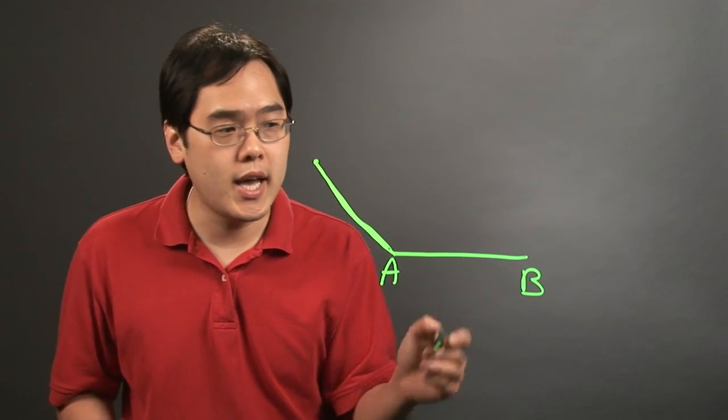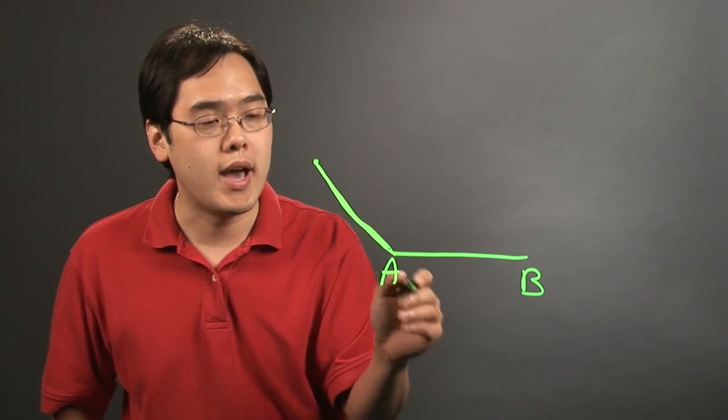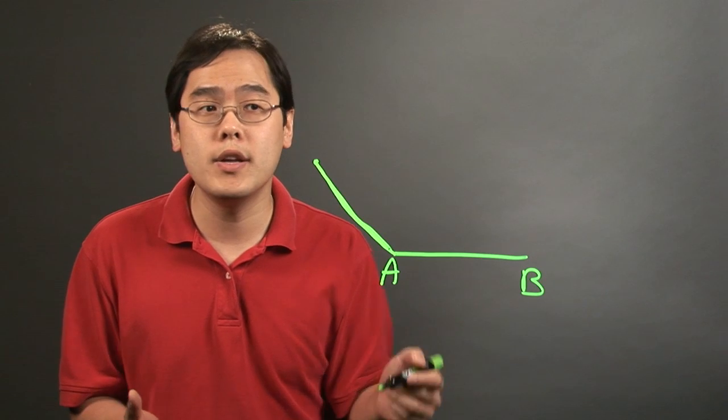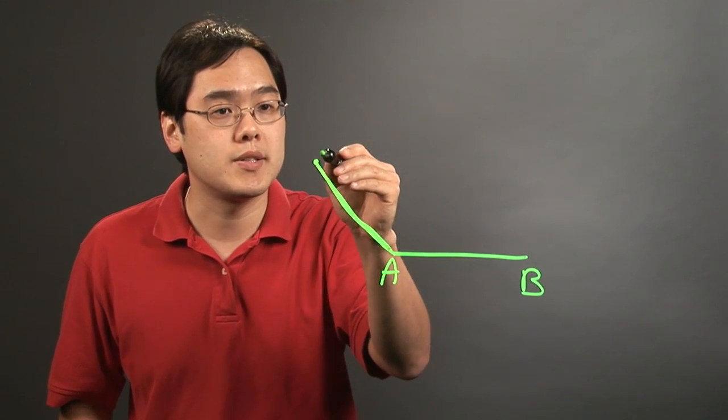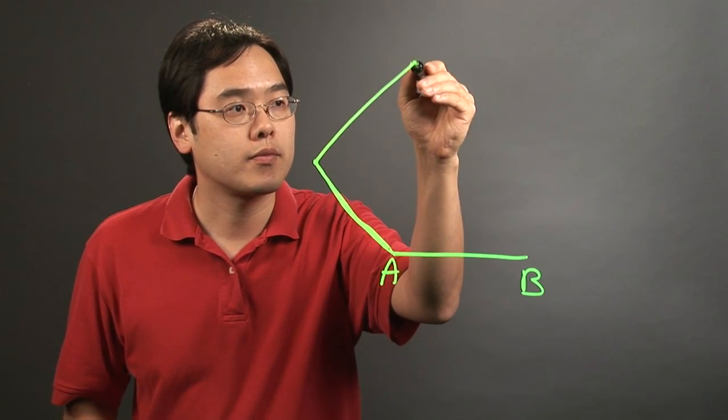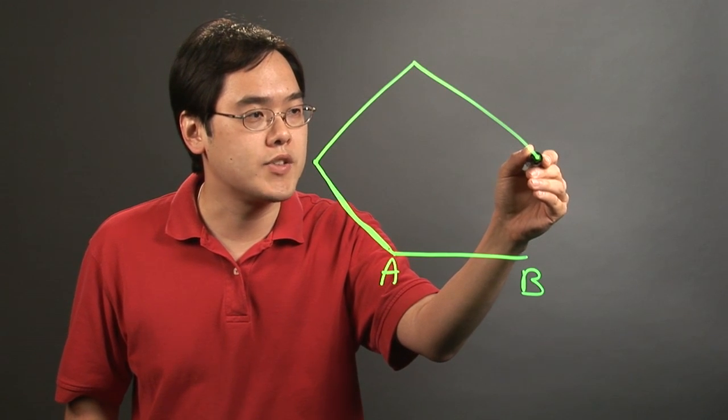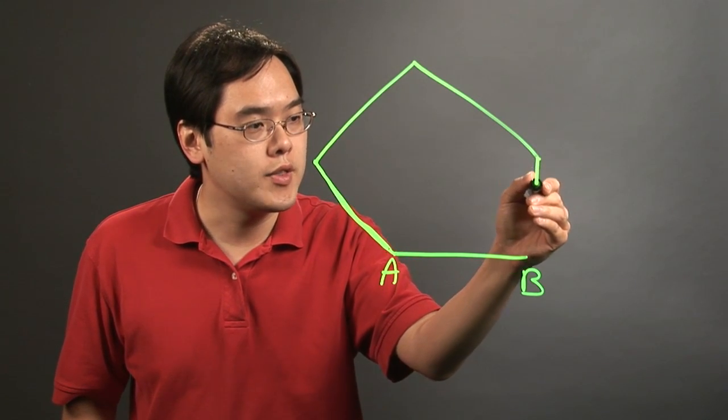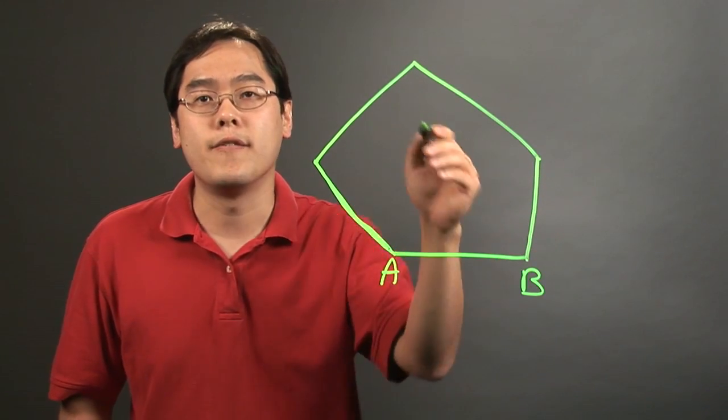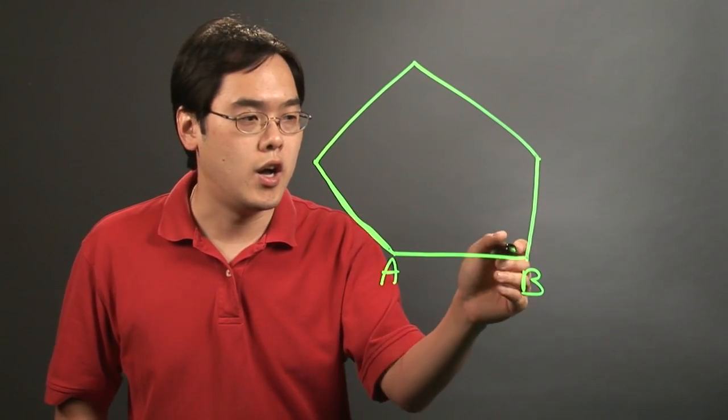Now as you know, a pentagon has five sides, so at this particular point you have two lines. What you want to do from here is repeat the process again, and using the protractor, the final side should end on point B.